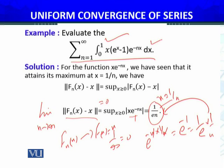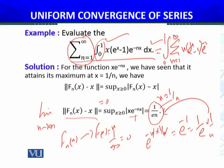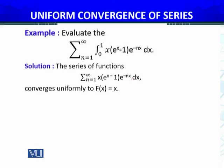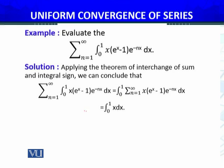If I have to evaluate this integral, I can interchange the summation and the integral. So the integral equals ∫₀¹ [summation n=1 to ∞ of x · e^(x-1) · e^(-nx)] dx. Since I have shown this series converges to the identity function x, this equals ∫₀¹ x dx. So the summation evaluates to this integral, and further this equals ∫₀¹ x dx.